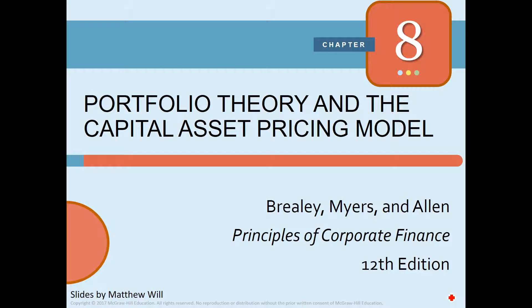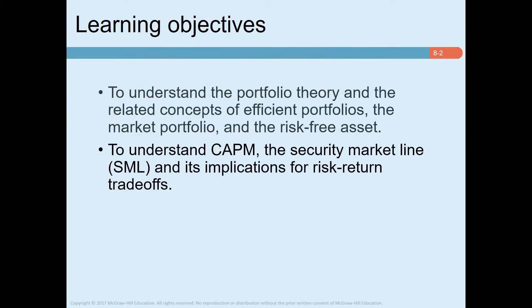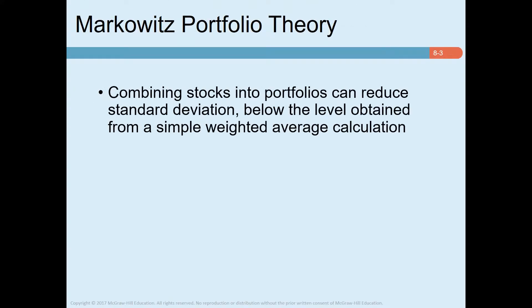In this chapter we build on that knowledge. We present leading theories linking risk and return in a competitive economy and show how these theories can be used to estimate returns required by investors in different stock market investments. Specifically, we will learn portfolio theories, the Capital Asset Pricing Model, equity market lines, and their implications for the risk-return trade-off.